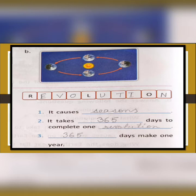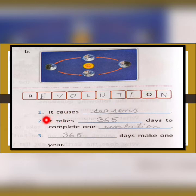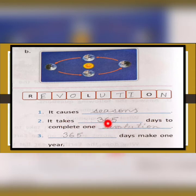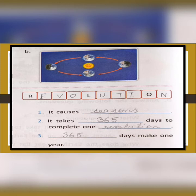For question B, the movement of the Earth around the sun is shown — that is revolution (R-E-V-O-L-U-T-I-O-N). Fill in the blanks: number one — it causes seasons; number two — it takes 365 days to complete one revolution; number three — 365 days make one year.